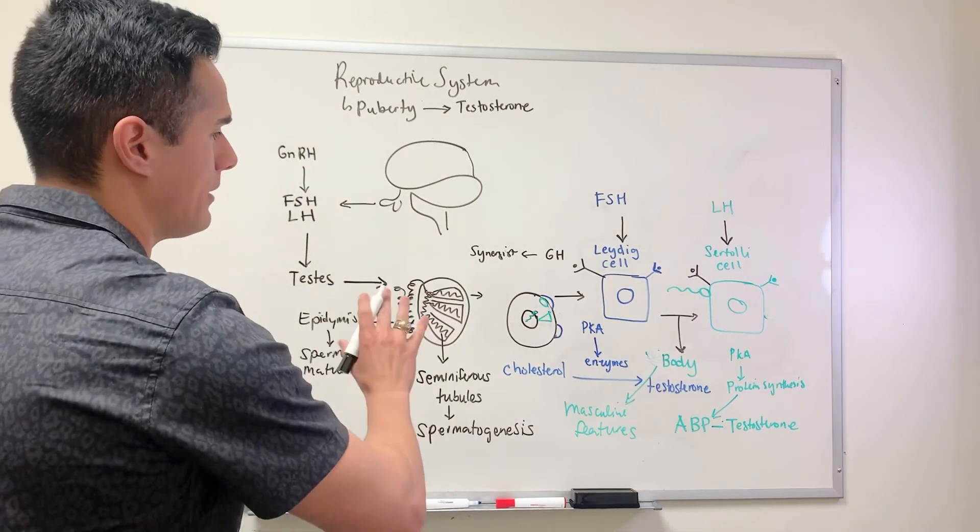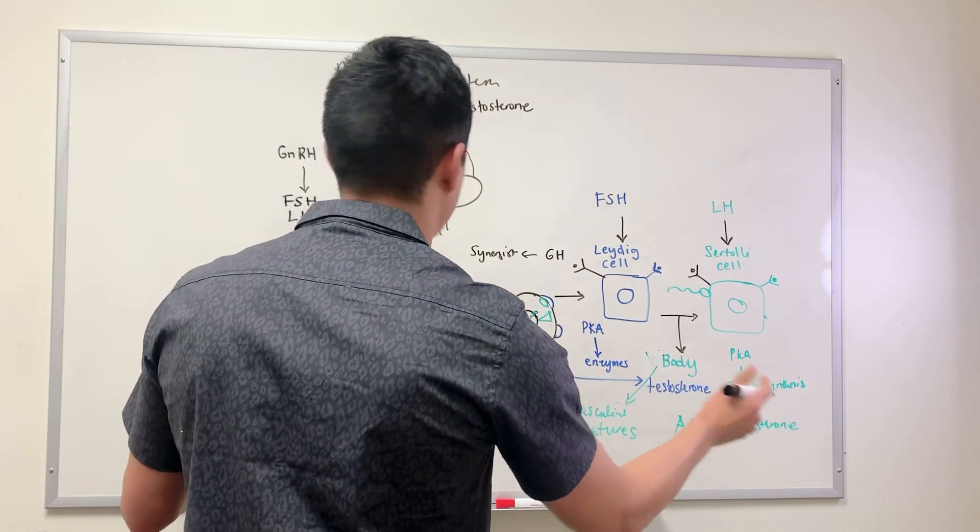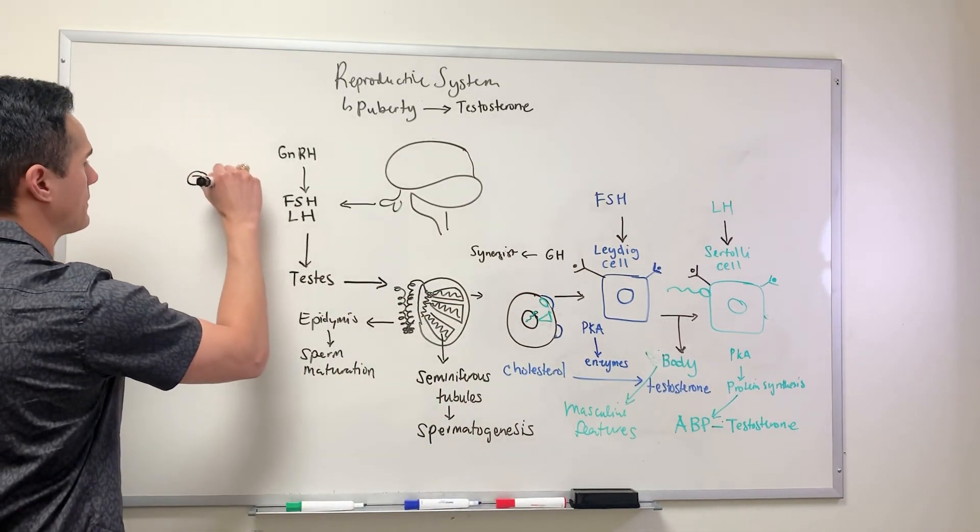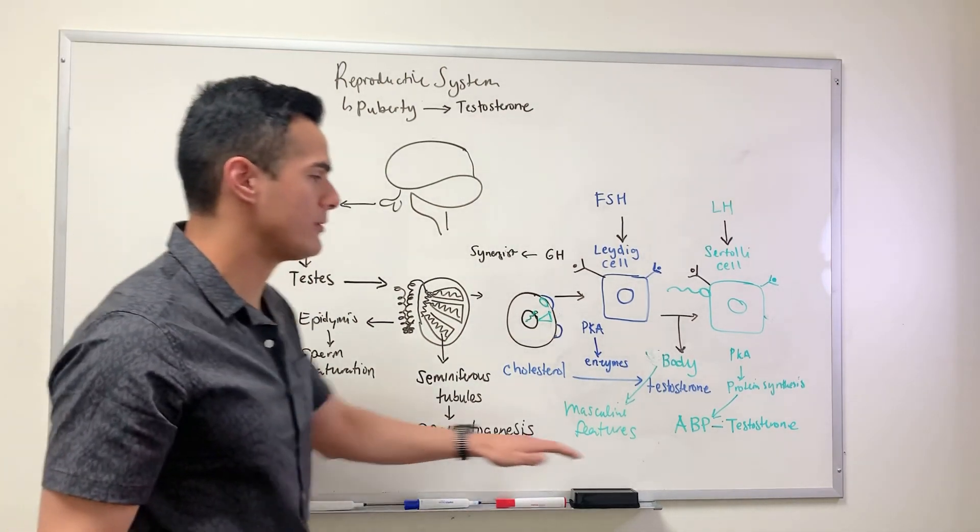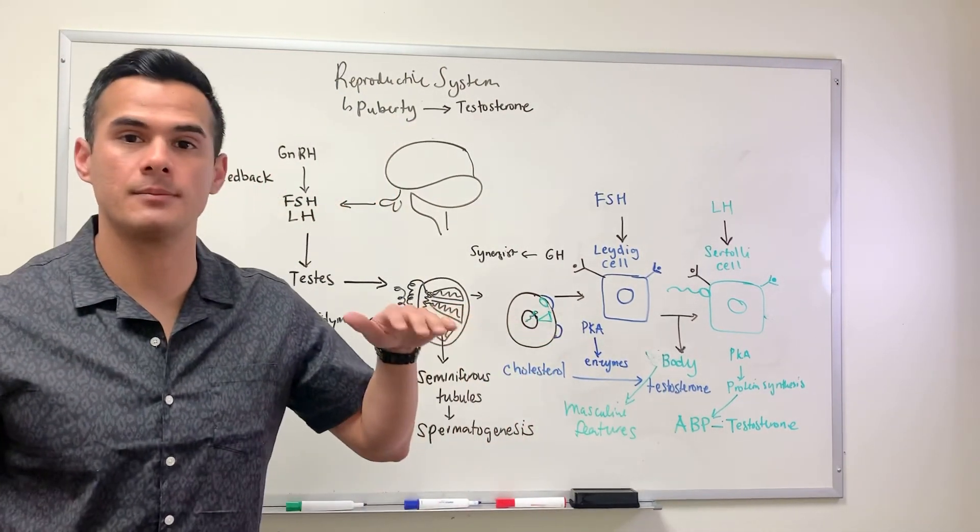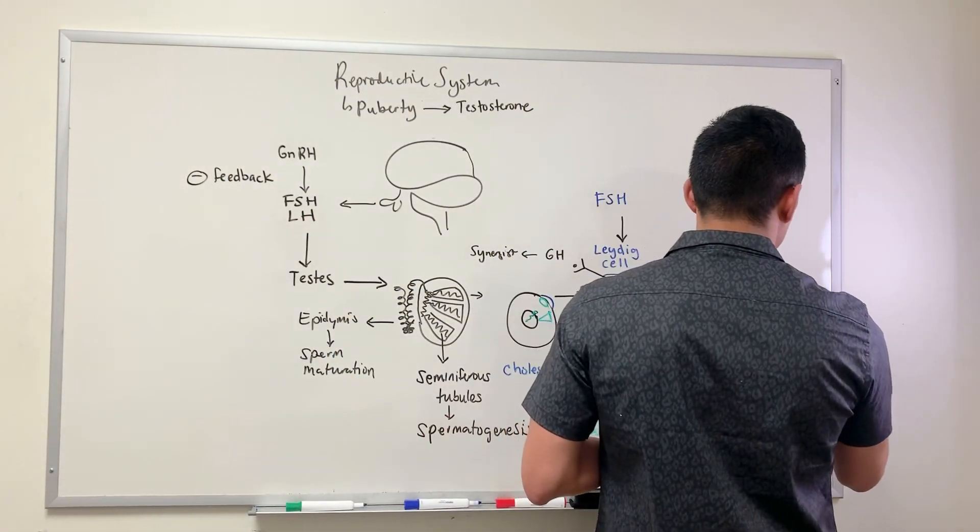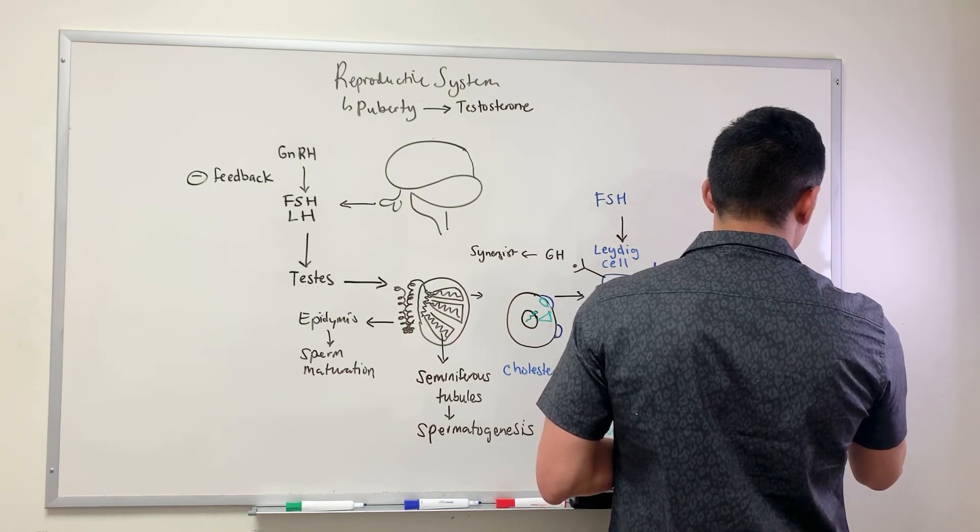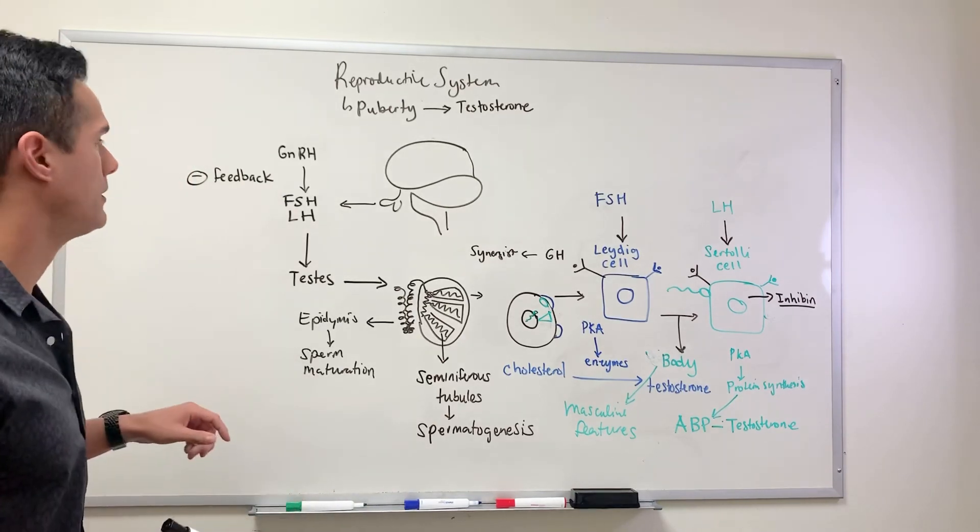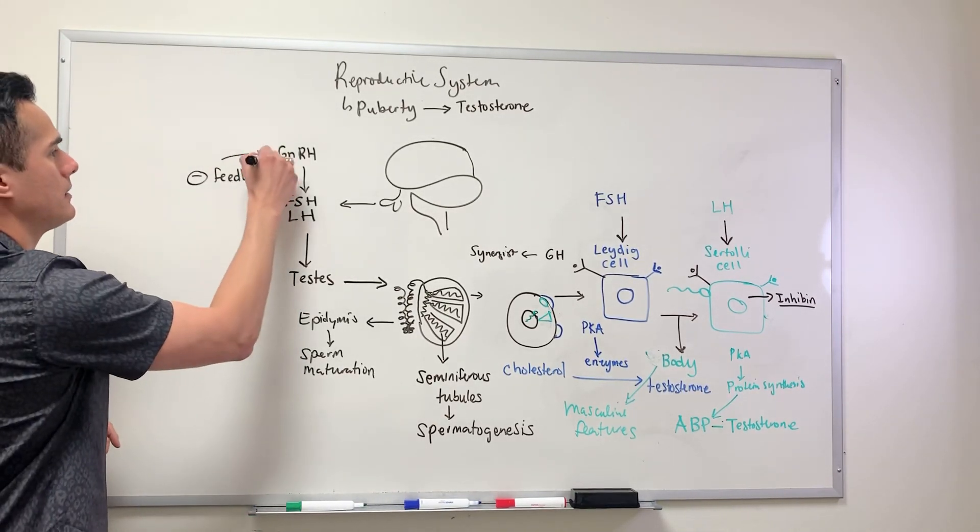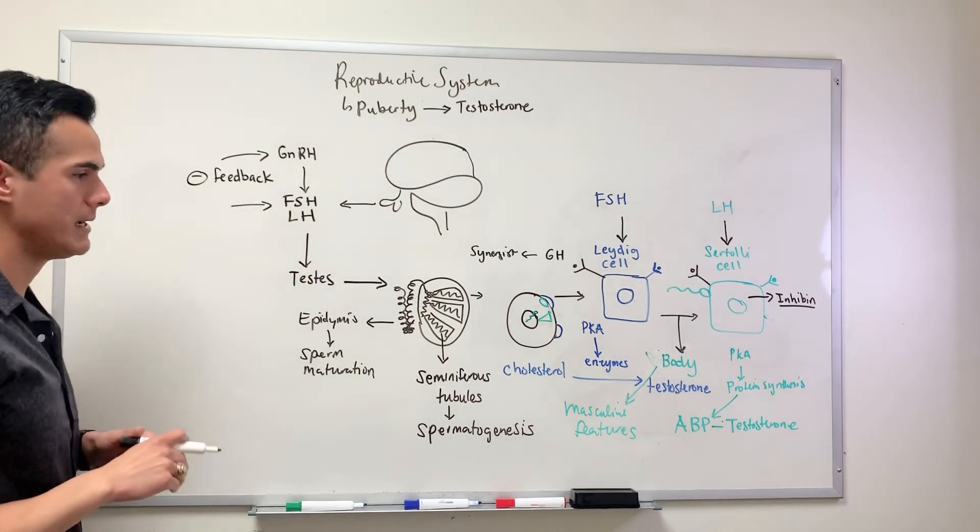Now that we have all this laid out, the last thing we need to discuss is negative feedback. When testosterone levels reach their optimal level, the Sertoli cells secrete inhibin. They call it inhibin because it's going to inhibit the gonadotropin-releasing hormone and also the hormones from the anterior pituitary.